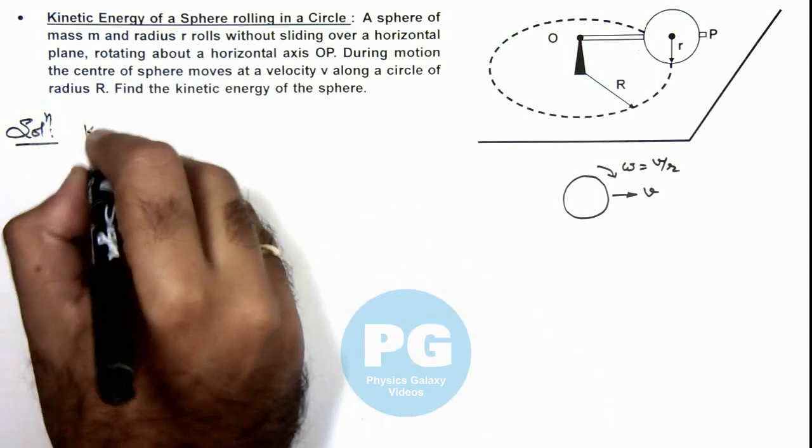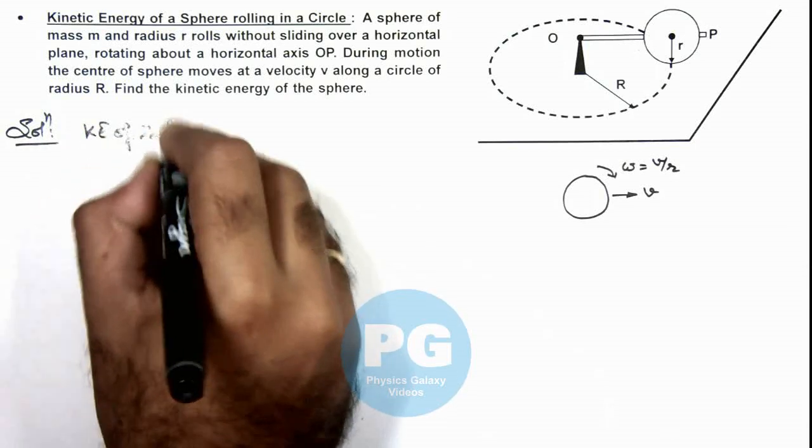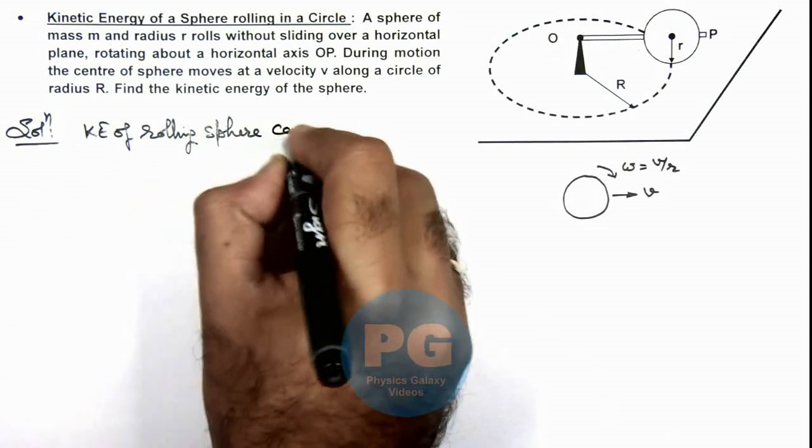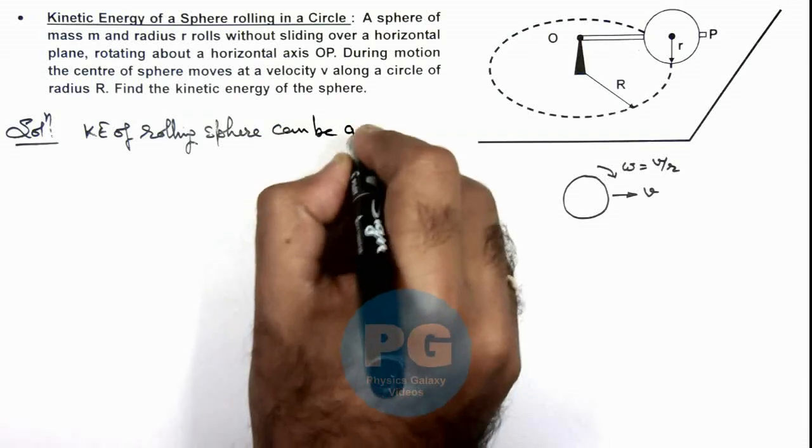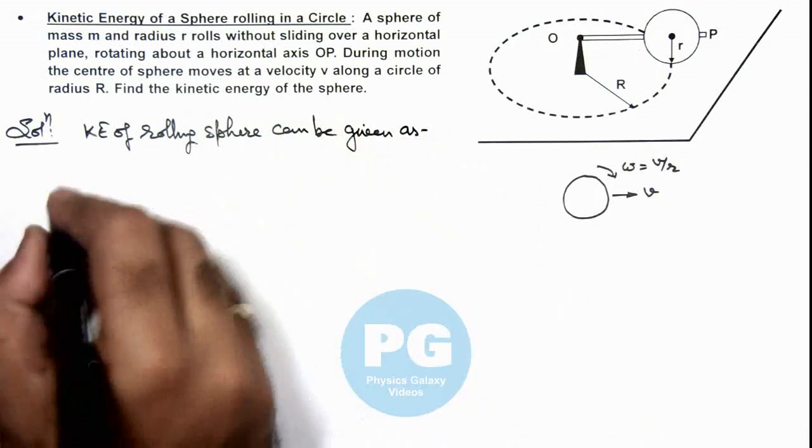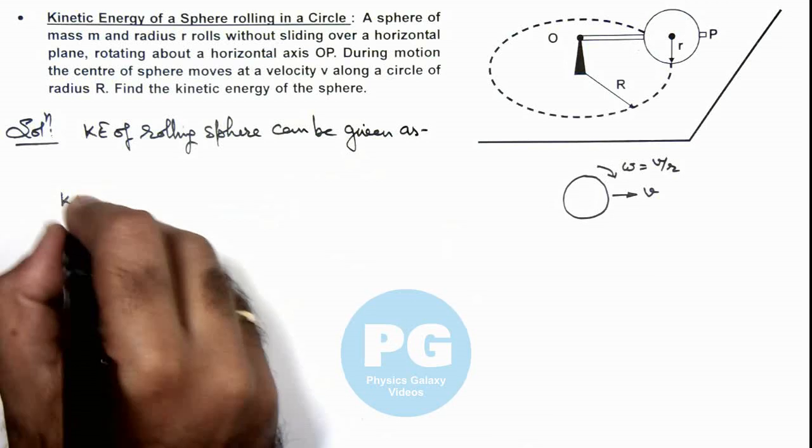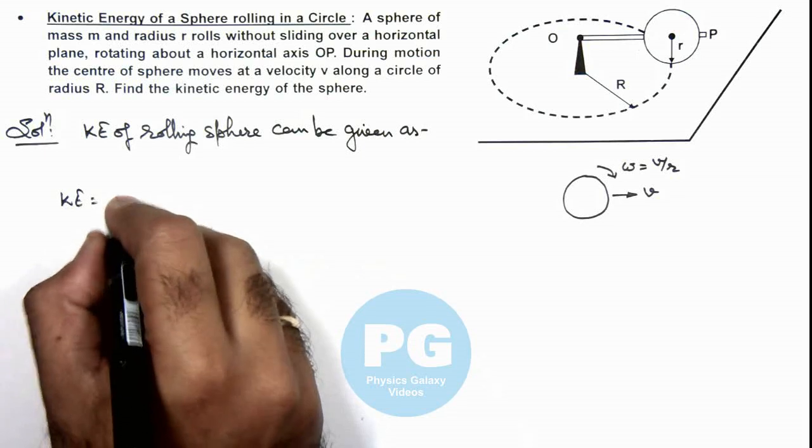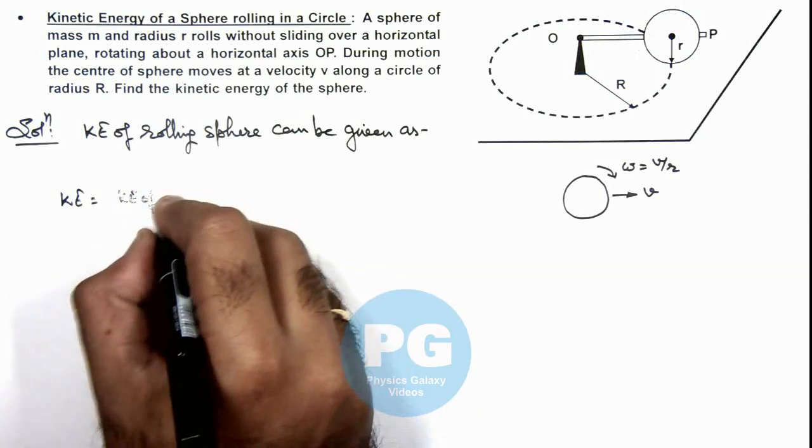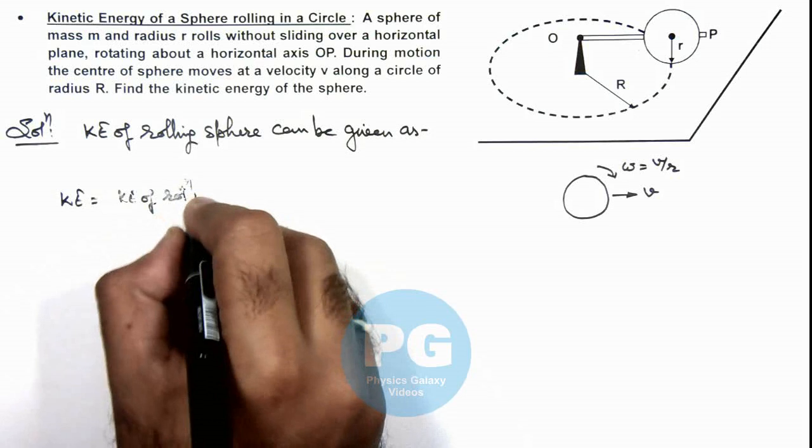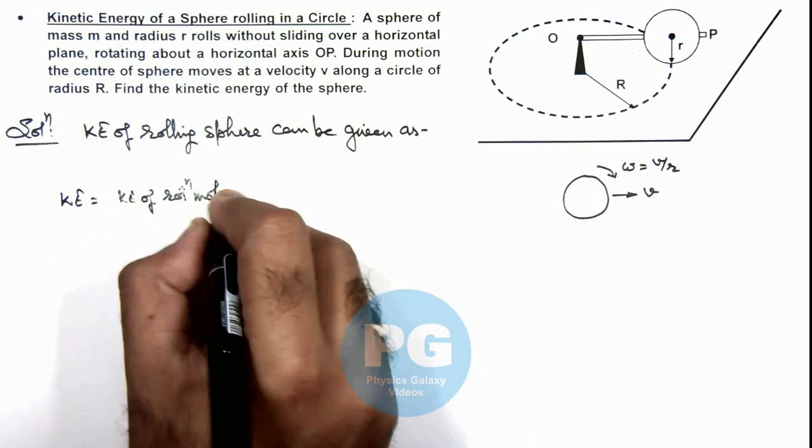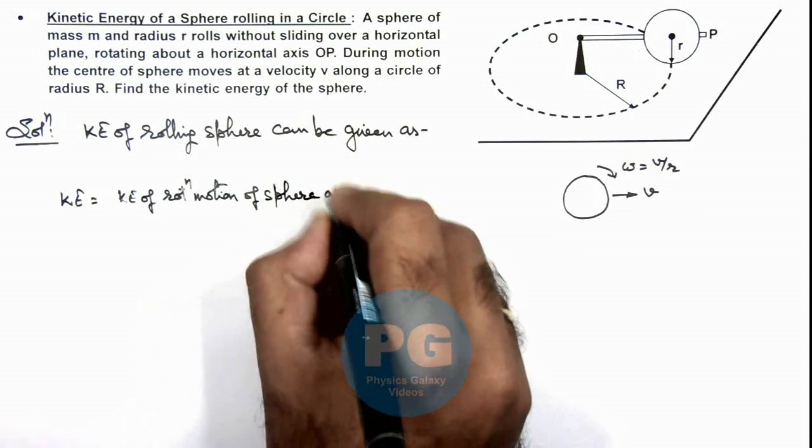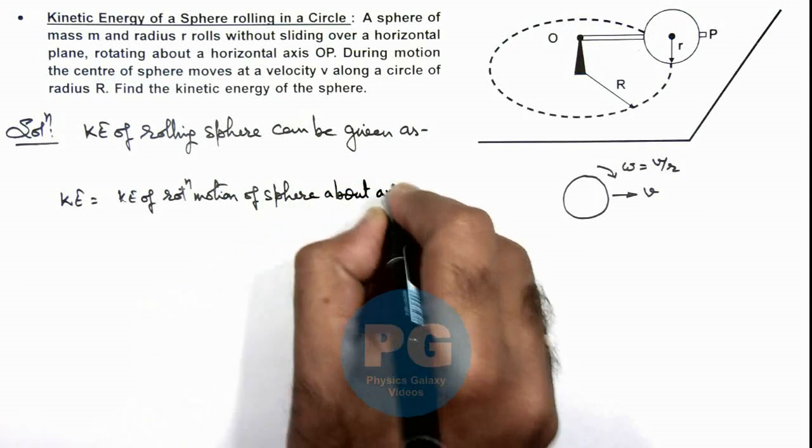That kinetic energy of rolling sphere can be given as the sum of two terms. One is, in this case, the kinetic energy of rotational motion of sphere about axis OP, plus...